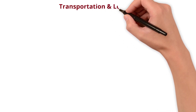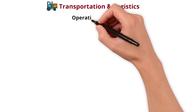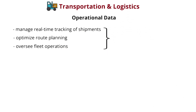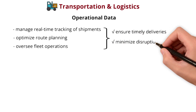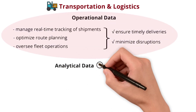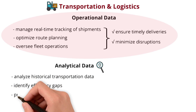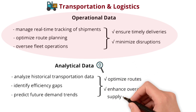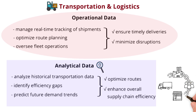In the fast-paced world of transportation and logistics, operational data manages real-time tracking of shipments, optimizes route planning, and oversees fleet operations — the key to smooth day-to-day logistics ensuring timely deliveries and minimizing disruptions. On the flip side, analytical data assumes the role of a navigator, analyzing historical transportation data, identifying efficiency gaps, and predicting future demand trends to optimize routes, enhance overall supply chain efficiency, and continuously improve transportation and logistics operations.